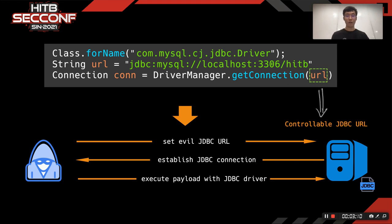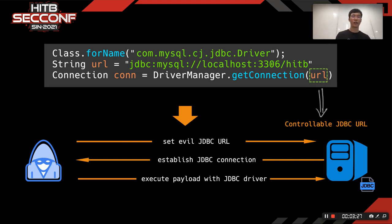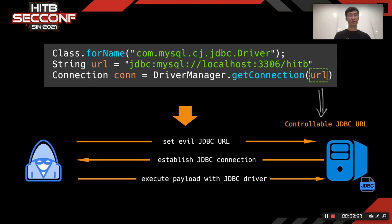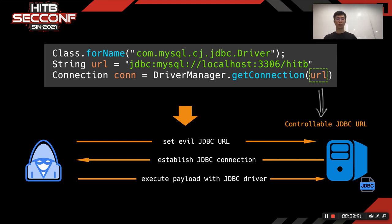In the case of a controllable JDBC connection, the basic attack idea is as follows. The attacker sets a malicious JDBC URL and triggers a JDBC connection. Then the JDBC client connects to the malicious server specified by the attacker. Attackers often take advantage of some security flaw or higher-privileged features in the JDBC driver, triggering these problems by constructing specific return data from the malicious server, resulting in remote code execution or other vulnerabilities.